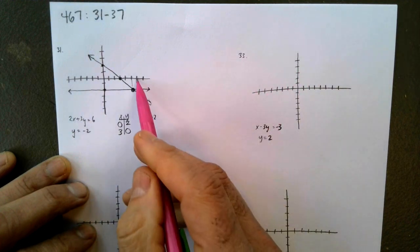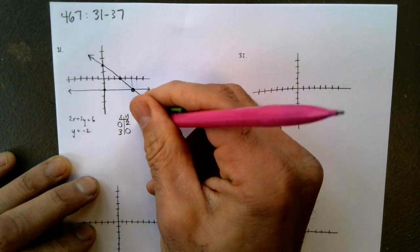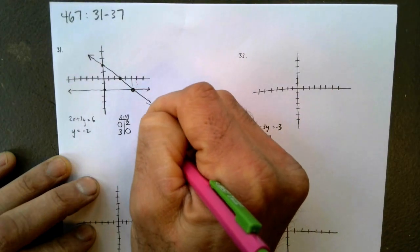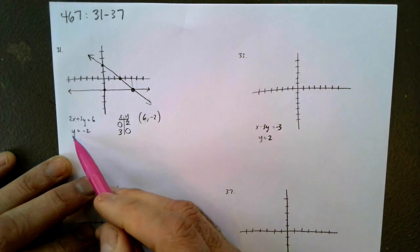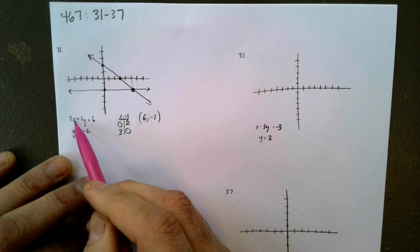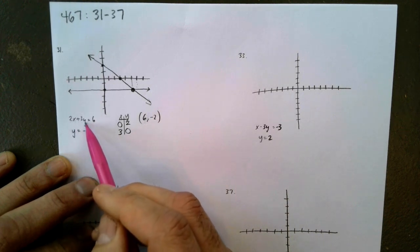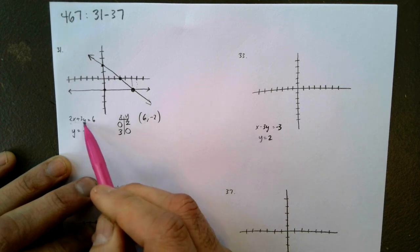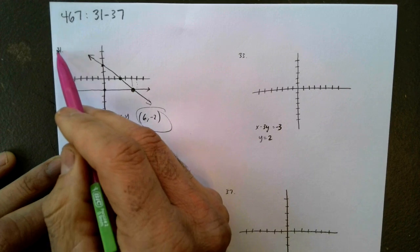All right, let's scoot it over then. So 5 negative 2 doesn't work. What about 6 negative 2? I know the negative 2 part works. 2 times 6 is 12. 3 times negative 2 is negative 6. 12 plus negative 6 is 6. That's the answer. Check.